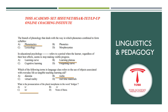Another question: which of the following terms in a language class refers to the use of objects associated with everyday life as tangible teaching aids? This is about real objects used in the real classroom — the answer is realia. Also, you need to know the pronunciation of plural morphemes: the endings are pronounced as /i/ or /z/. These are key areas in linguistics and pedagogy where you can score marks.